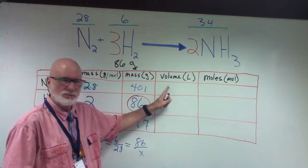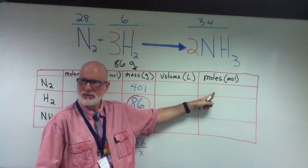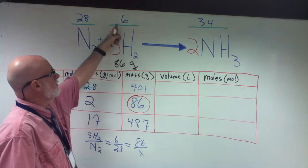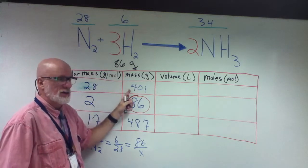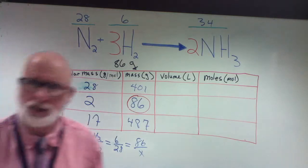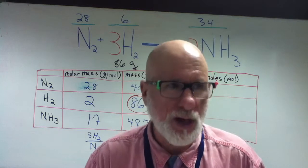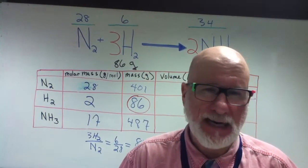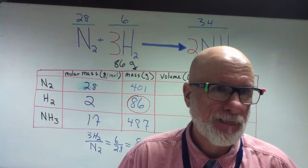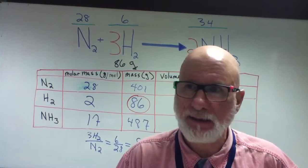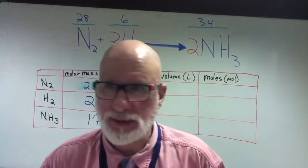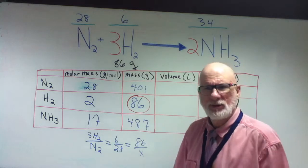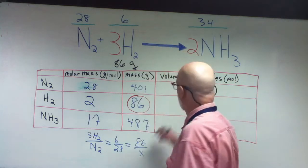So now what's the volume? We have to do moles first — we have to do this column first. How many moles does this represent? You don't use this value here — you need the number of moles. 401 grams of nitrogen represents how many moles? 401 divided by 28? 14, right.